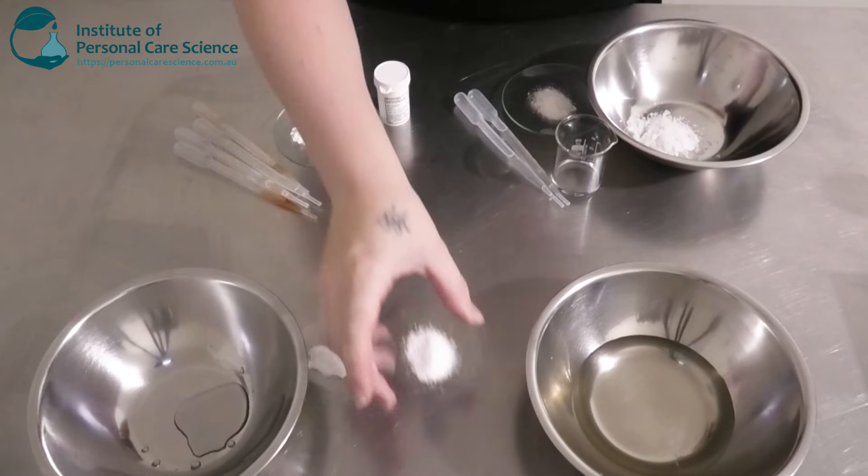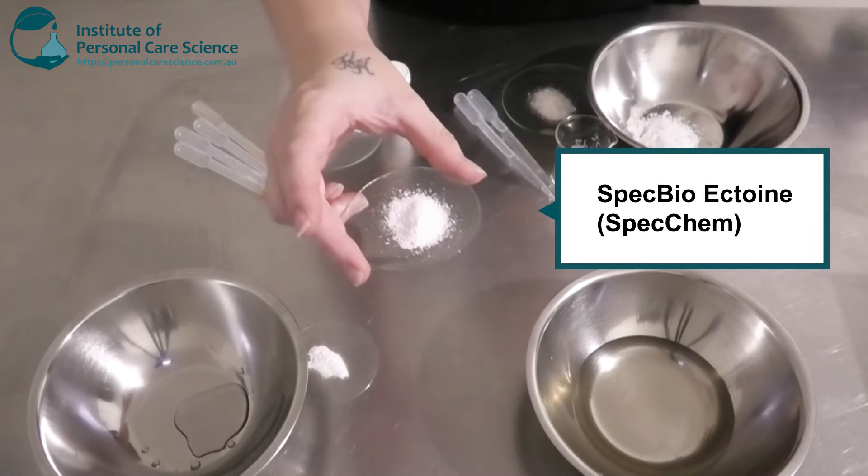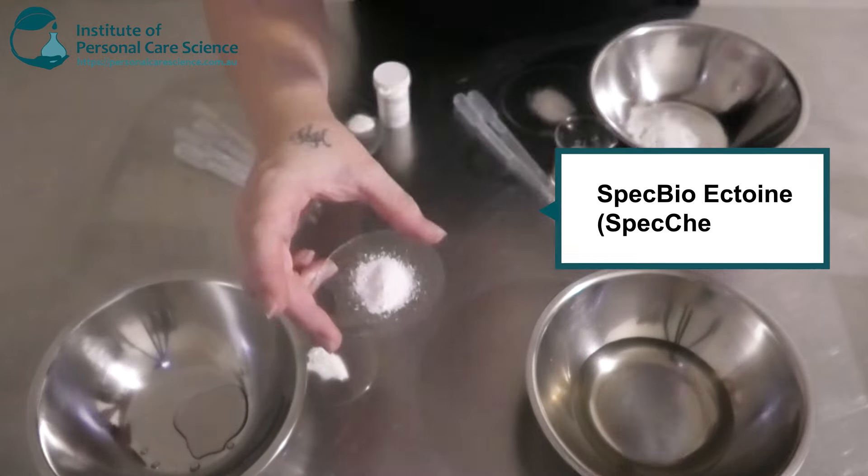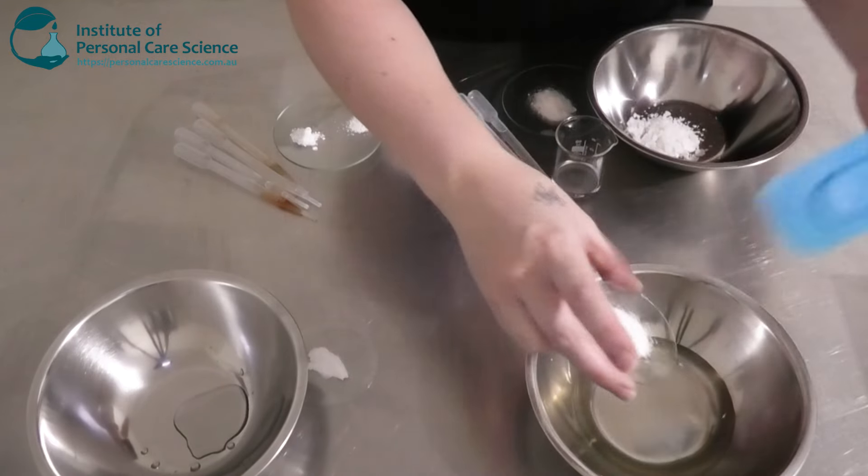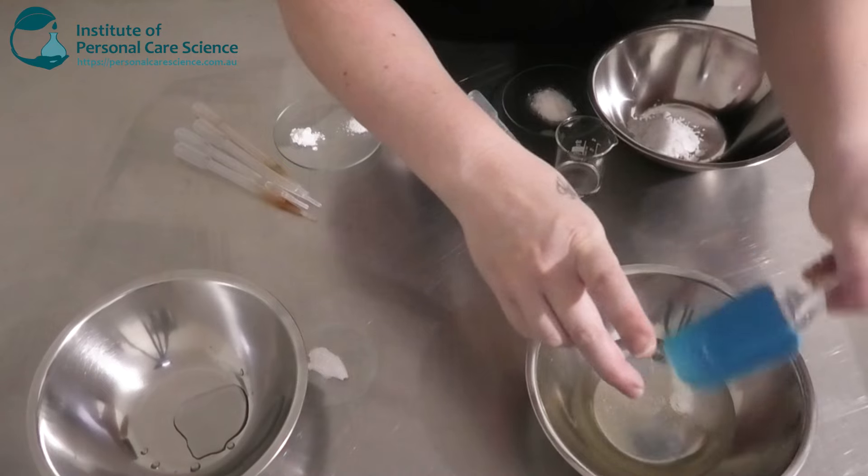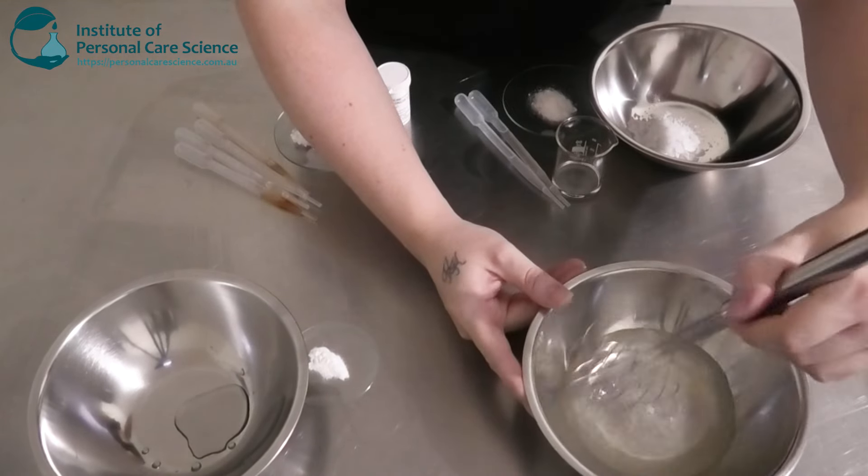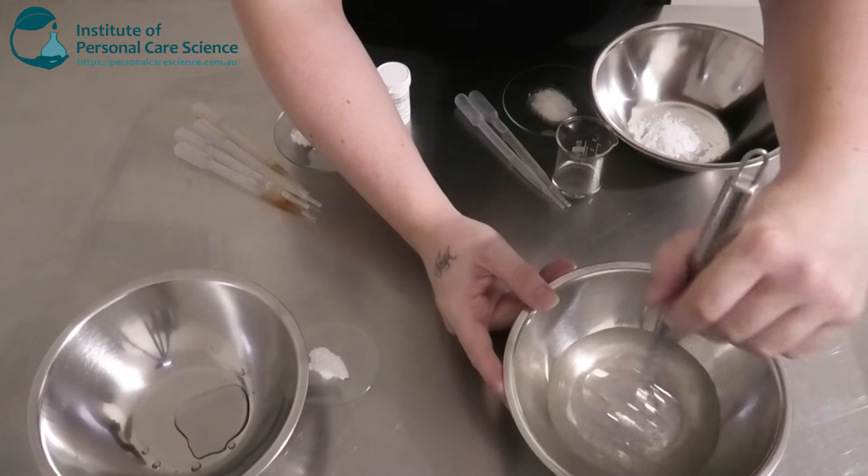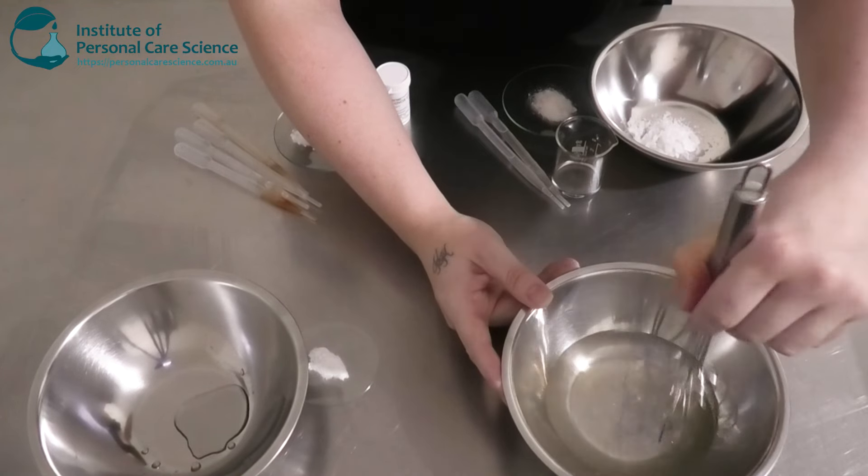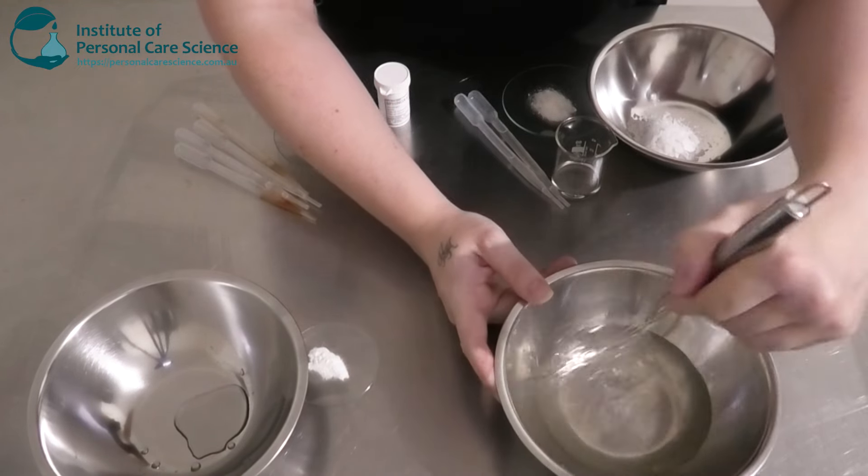Now I am going to be adding some of this Speck Bio Ectoine by Speck Chem. This is going to help moisturize and plump the skin but it's also got some anti-aging benefits in it as well. So I'm just going to give that a bit of a stir to dissolve the ectoine. It will need a bit of a stir in the water phase. It is heat tolerant as well.